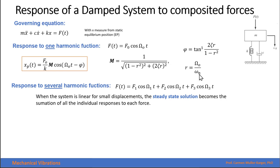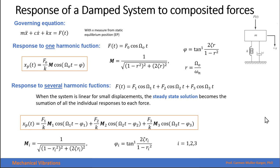If we have three forces and the system is linear for small displacements, the steady-state solution becomes the summation of all individual responses to each of the forces. I can write the response as the response to the first force, plus the response to the second force, and so on. Each of these responses has a different magnification factor because the frequency ratio r varies since the frequency of each force is different.